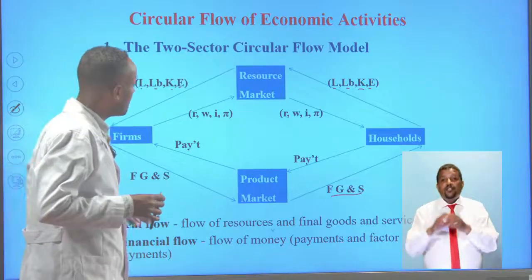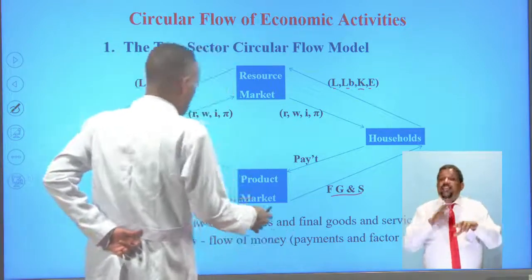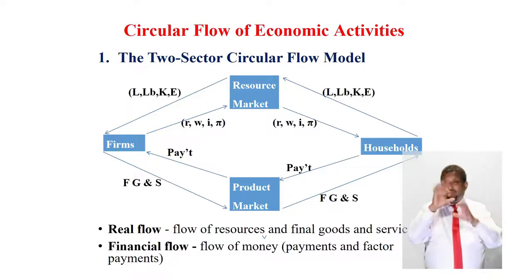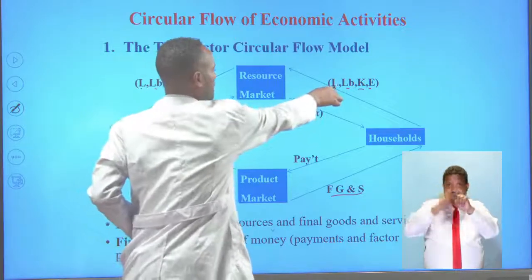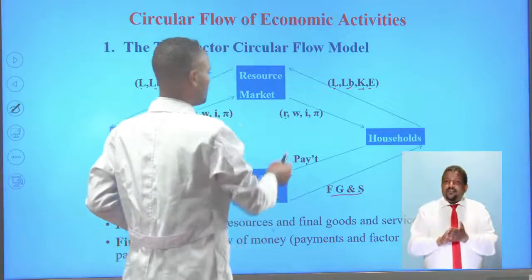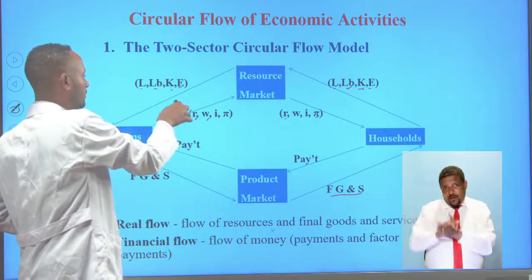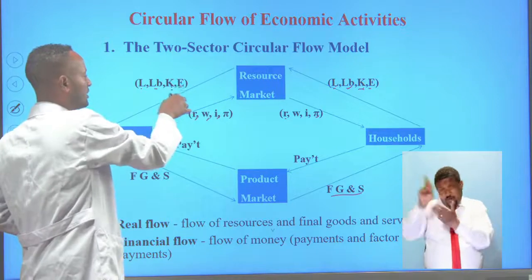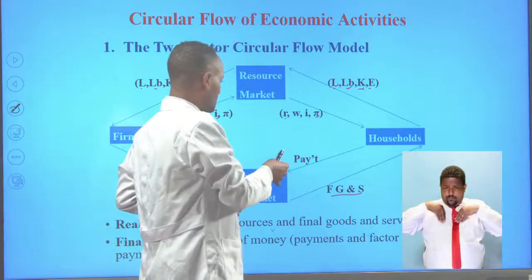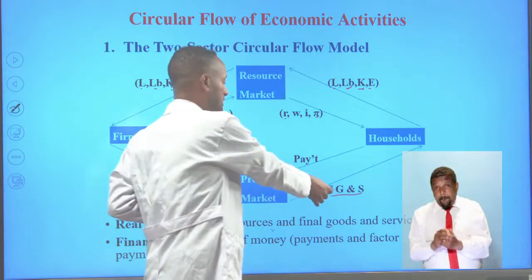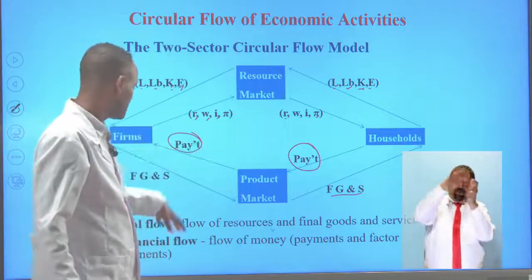The money flow works as follows: when households supply economic resources, they in turn receive payments — rent for land, wages for labor, interest for capital, and profit for entrepreneurship. When firms offer final goods and services, they receive payments. And when households buy final goods and services, they make payments. This flow showing the movement of money among decision-making units is called the financial flow.